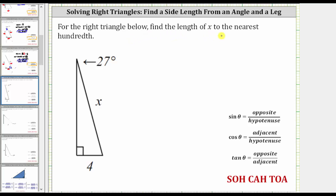For the right triangle below, find the length of x to the nearest hundredth. Looking at the right triangle, notice how we are given the measure of this angle here, which is 27 degrees.